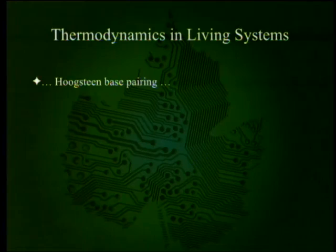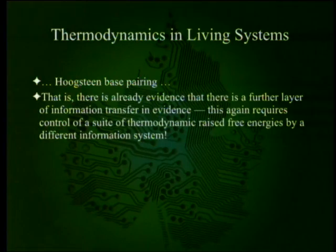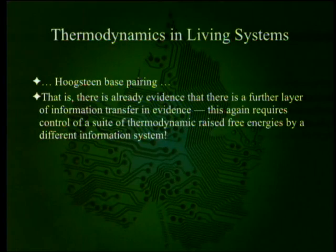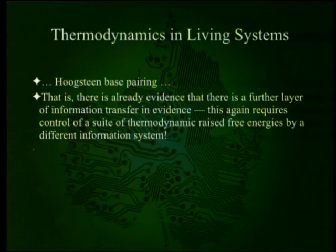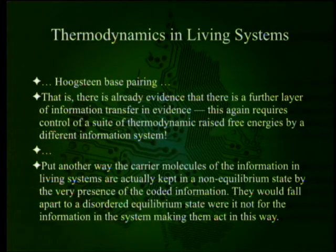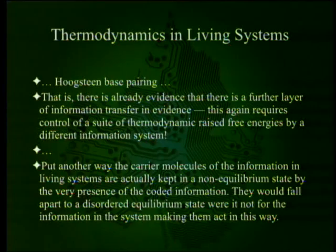There is already evidence of a further layer of information transfer beyond standard base pairing — Hoogsteen base pairing — which again requires control of thermodynamic raised free energies by a different information system. Put another way, the carrier molecules of information in living systems are actually kept in a non-equilibrium state by the very presence of the coded information. They would fall apart to a disordered equilibrium state if it were not for the information in the system — specifically, information in little machines that go around correcting the DNA.